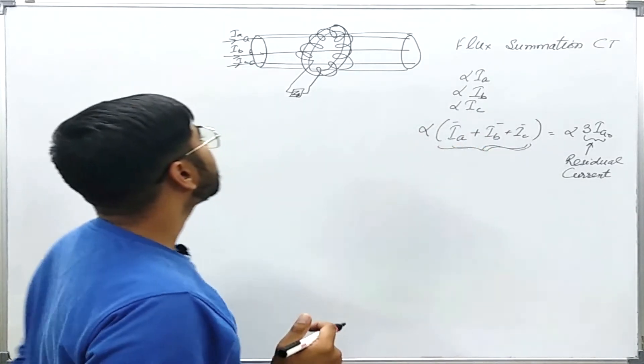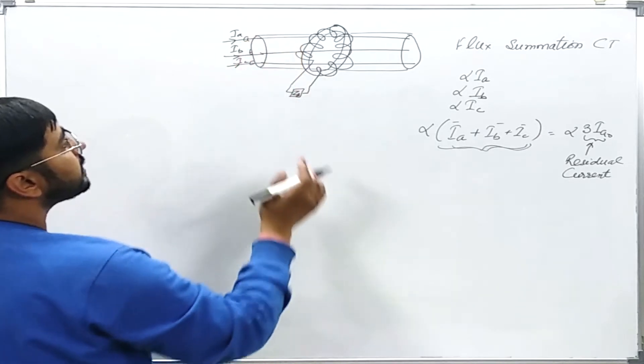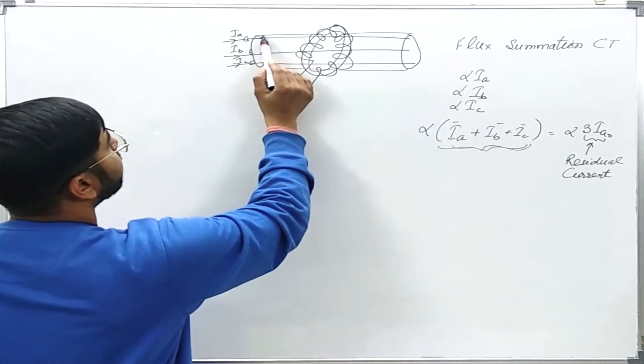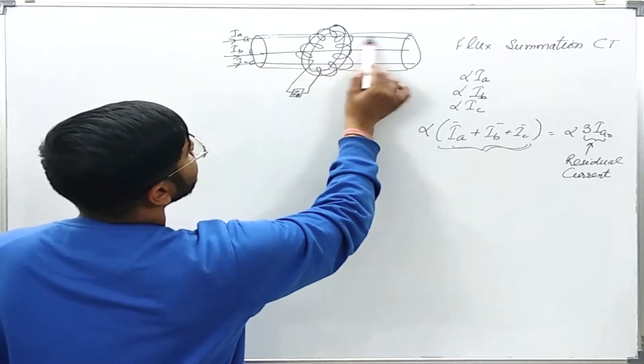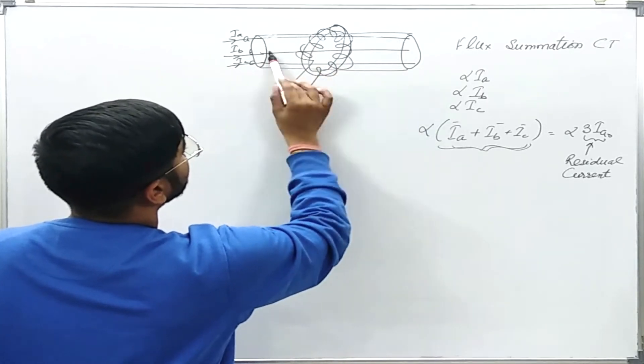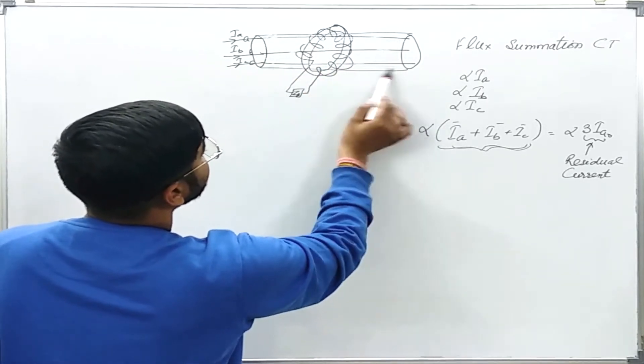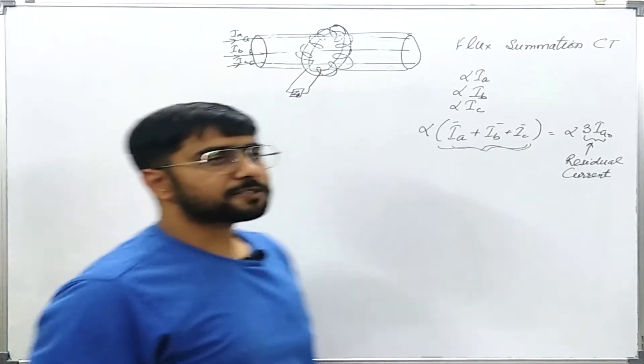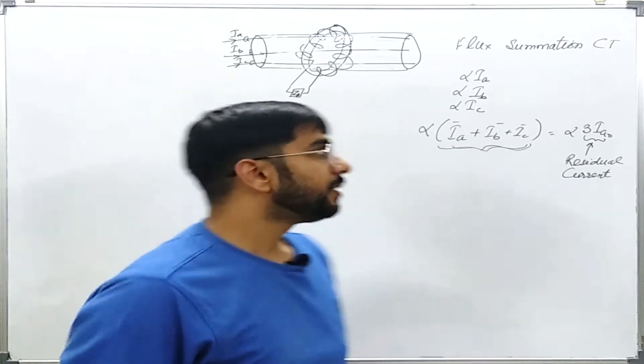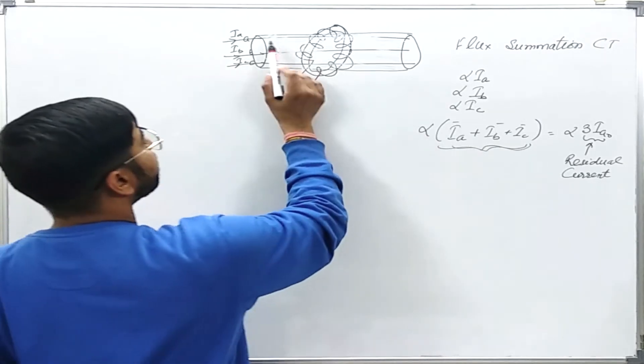Let us say that this cable is having a sheath over it. Some metallic sheath is there over the cable.